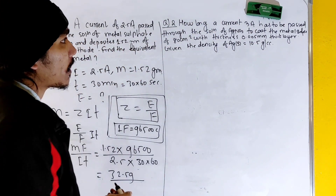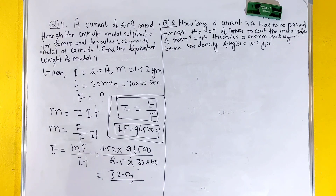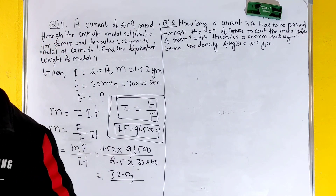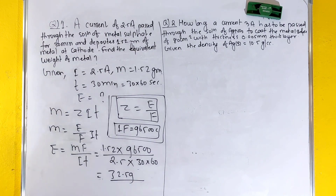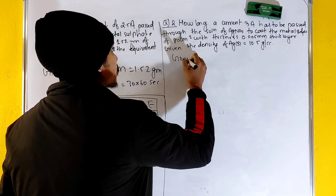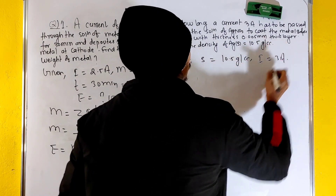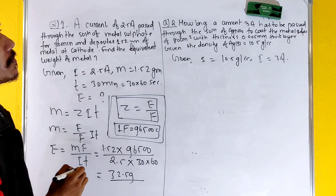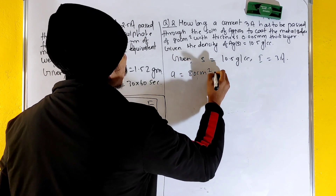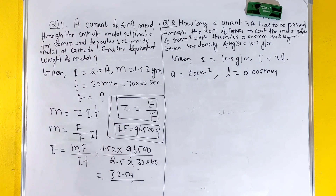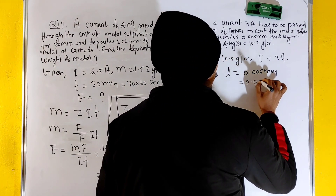The answer for the equivalent weight of the metal is 80. Now moving to question 2: to coat a metal surface of 80 centimeter square with a thickness of 0.005 millimeter thick layer, given the density of silver is 10.5 grams per cc.